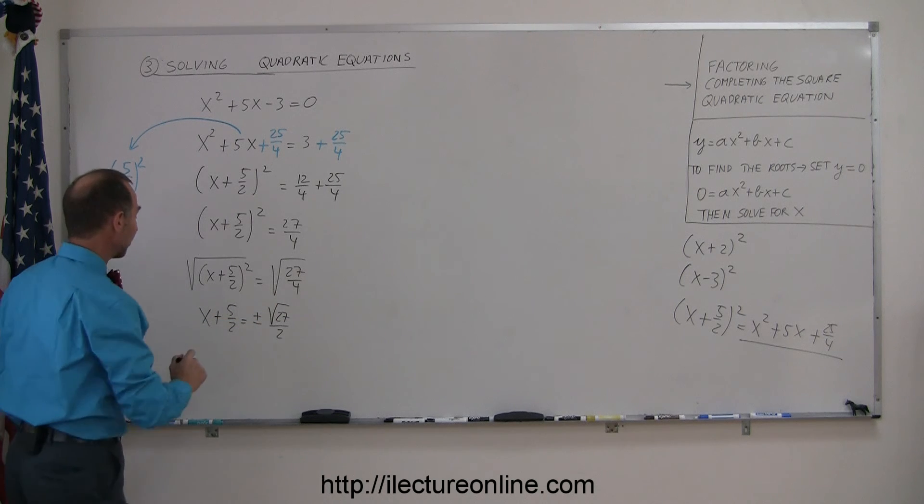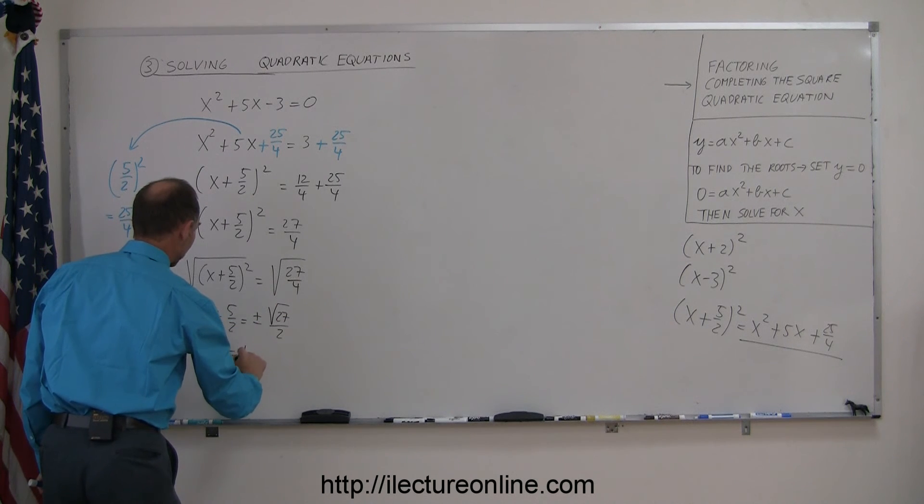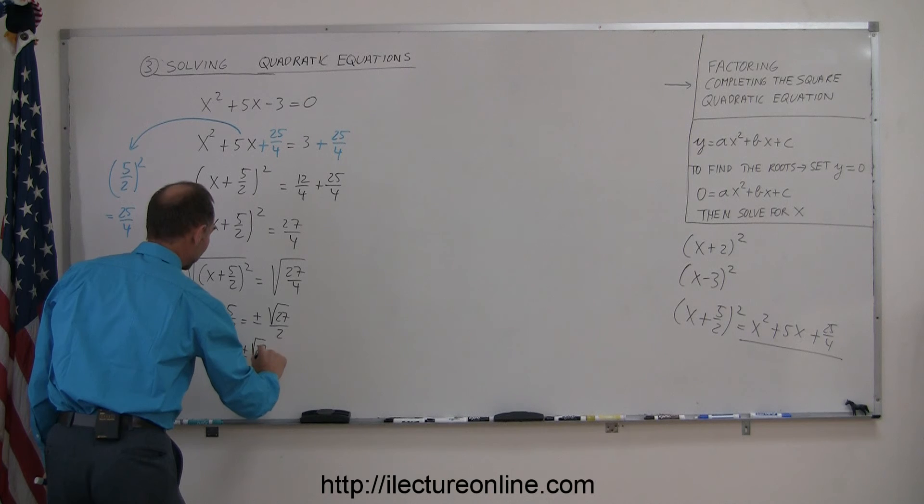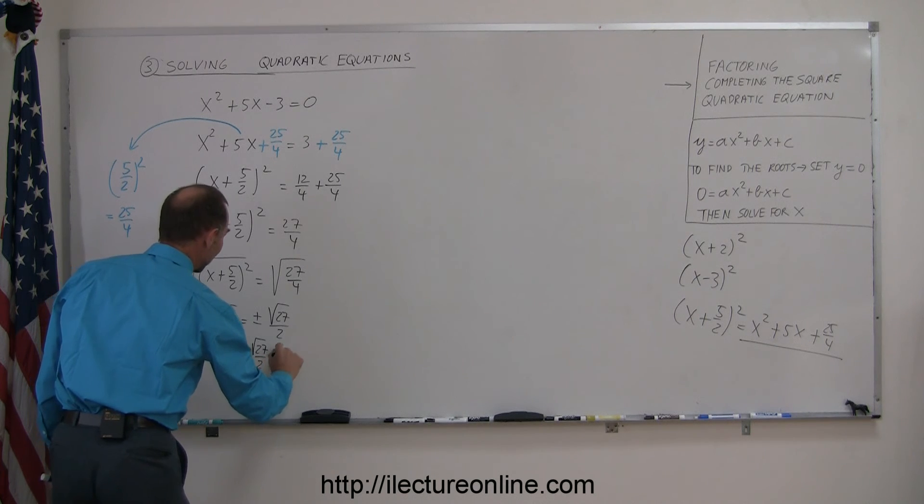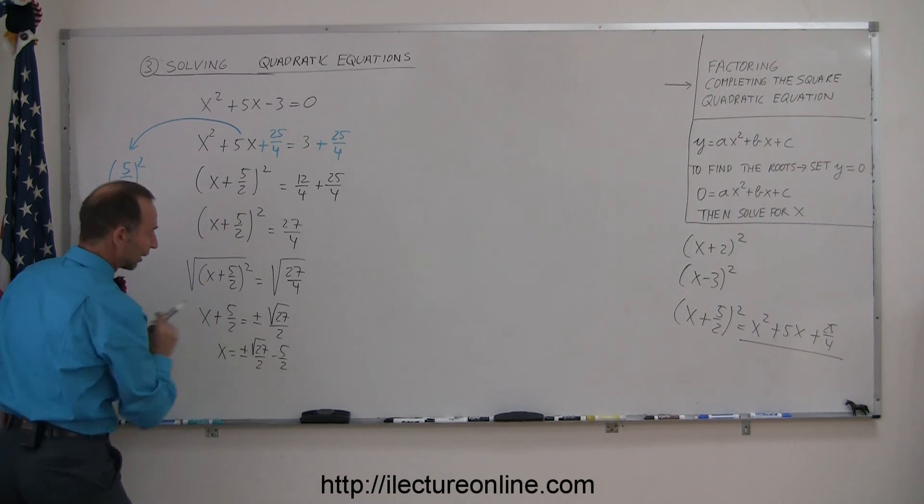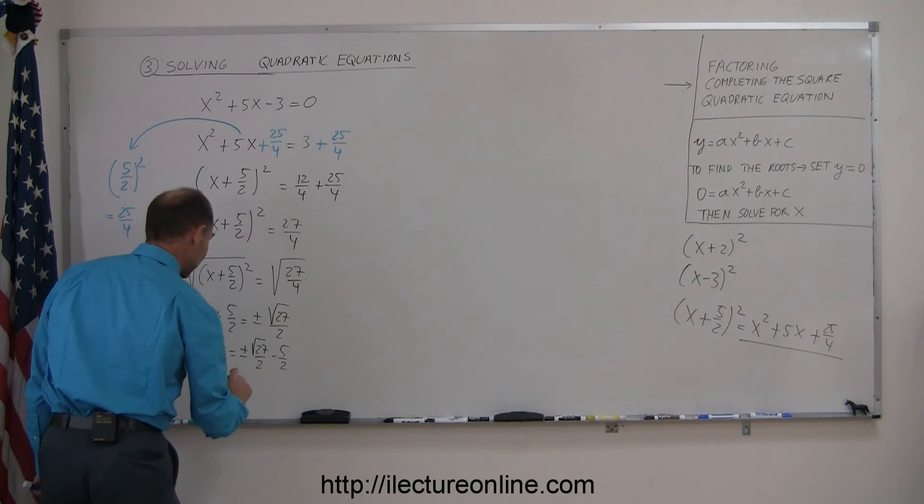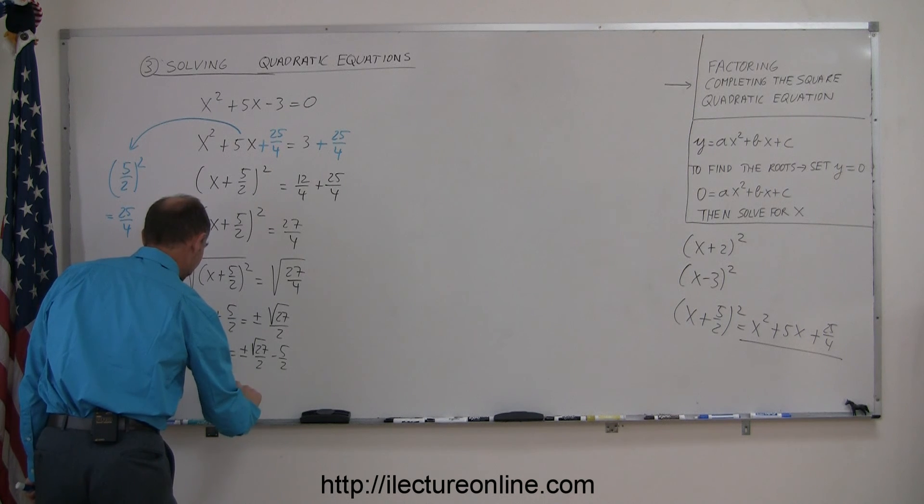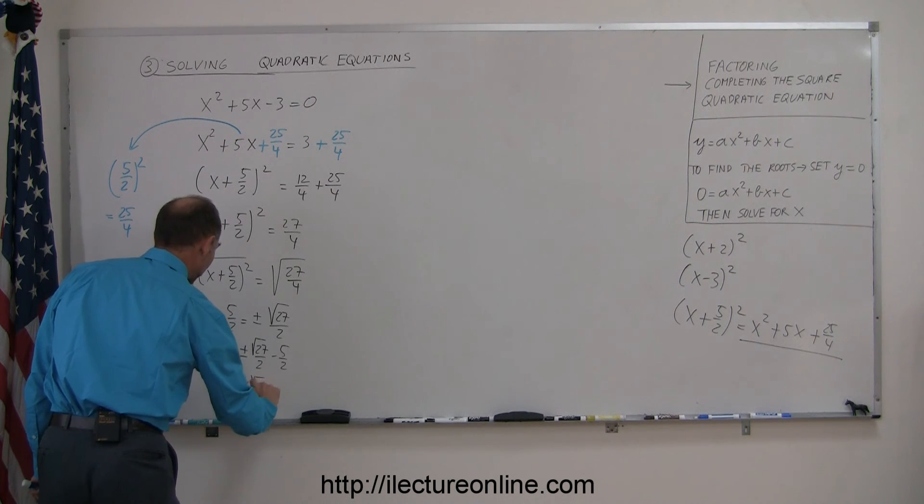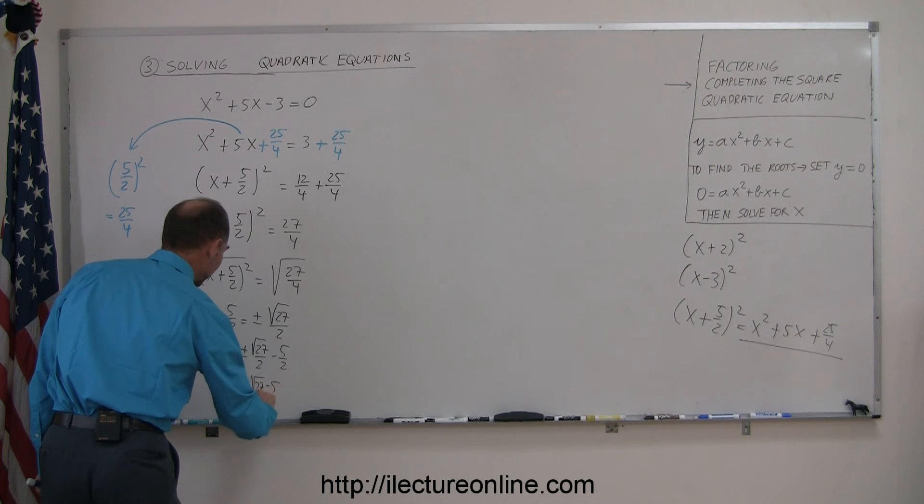And now I can move the 5 over 2 to the other side, I have x is equal to plus or minus the square root of 27 over 2 minus 5 over 2, and finally I can write that over a simple common denominator, so x is equal to plus or minus the square root of 27 minus 5 over 2.